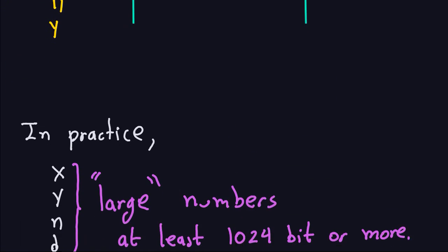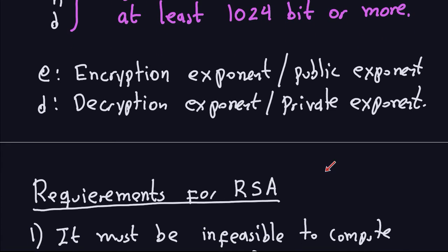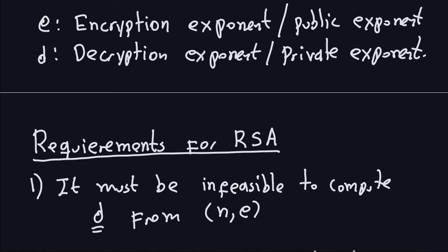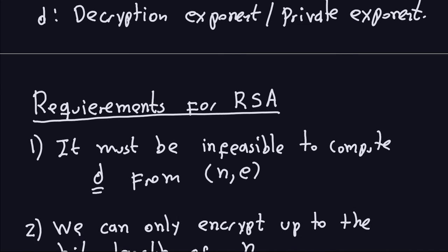There are important requirements for RSA. The first requirement is that it must be unfeasible to compute D from the public key pair N and E. If it were feasible, Eve who is always listening could compute D from the public key. Unfeasible here means the computation time would be on the order of thousands of years to compute D from this pair.